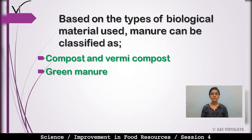Based on the type of biological material used, manure can be classified into two types: compost (vermicompost) and green manure.